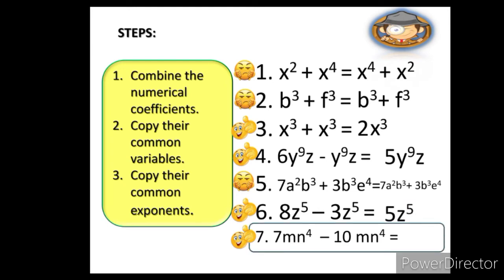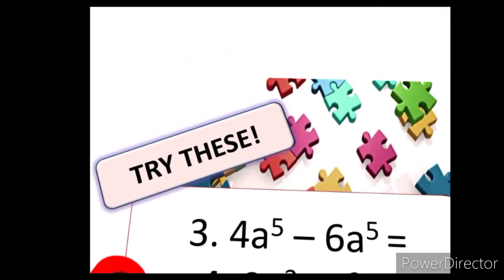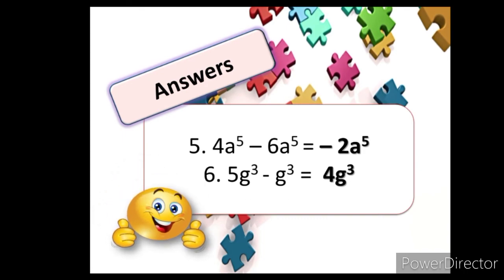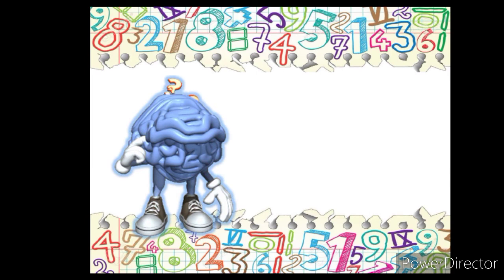Number 7. Take note that 7 minus 10 is equals to negative 3. Let's try this. Are you doing great so far? Very good!